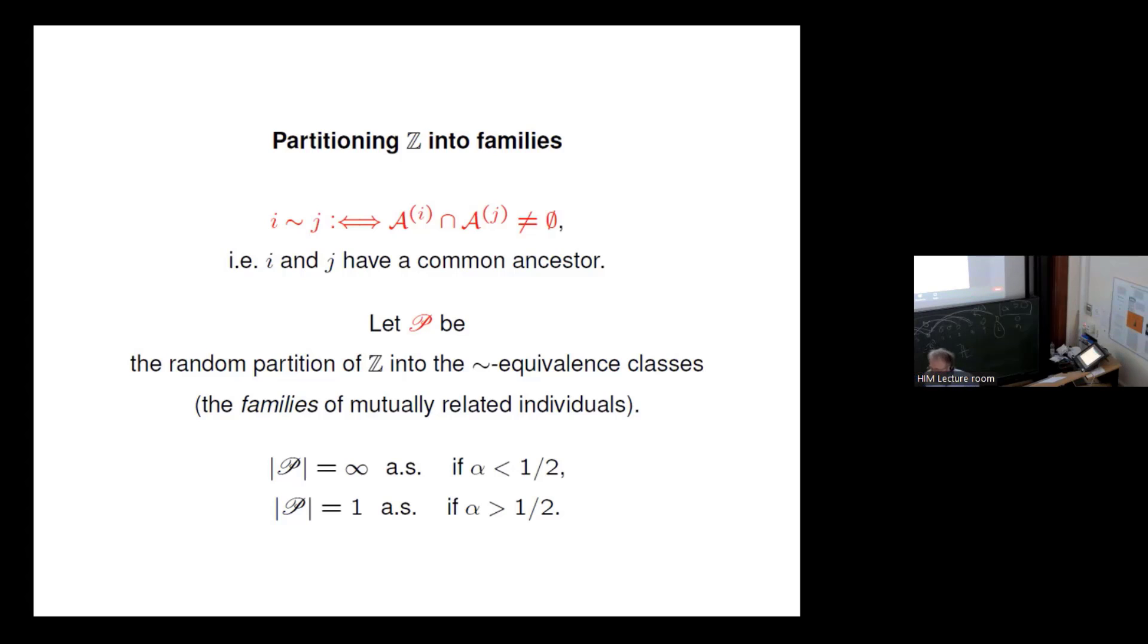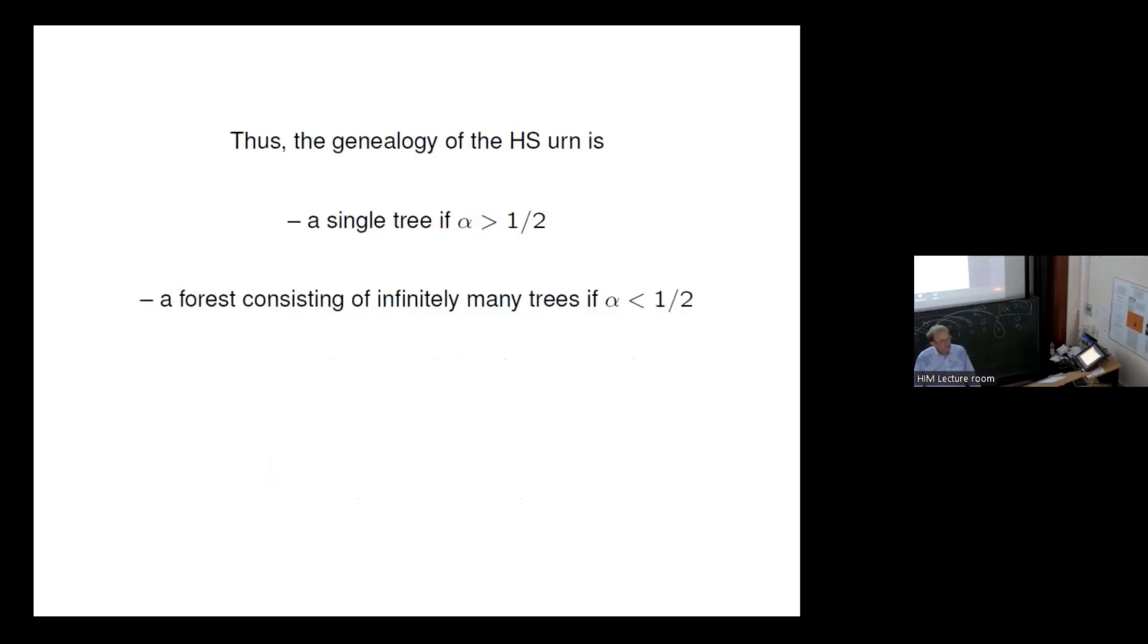Now, we have this random equivalence relation, which says that i and j are related. They belong to the same family if they have a common ancestor. So we have a random partition of the integers. And what we saw so far is that this random partition is trivial if alpha is bigger than one half, and it's non-trivial. And in fact, it has infinitely many... that's an ergodicity and stationarity argument. It cannot have finitely many, but it has infinitely many components or families if alpha is smaller than one half.